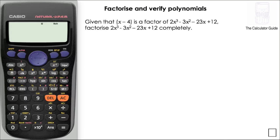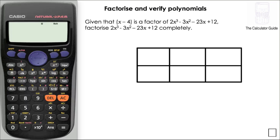We're moving on to question 2 now. Given that x minus 4 is a factor of 2x cubed minus 3x squared minus 23x plus 12, we have to factorise that polynomial completely. Here's my grid again — three columns to represent that my highest power of x is x cubed, and two rows because I've got two terms in the factor: x and minus 4.